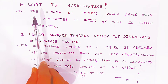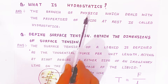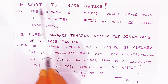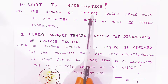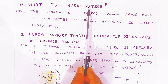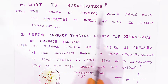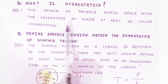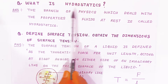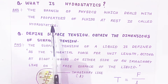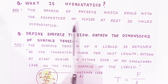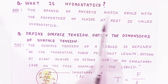Now one more question which comes as a one-mark question: what is hydrostatics? 'Hydro' refers to liquid or water. Hydrostatics is the branch of physics which deals with the properties of fluids at rest. 'Statics' means at rest. So the branch of physics which deals with the properties of fluids at rest is called hydrostatics. The fluid is not flowing; it is at a stationary position.